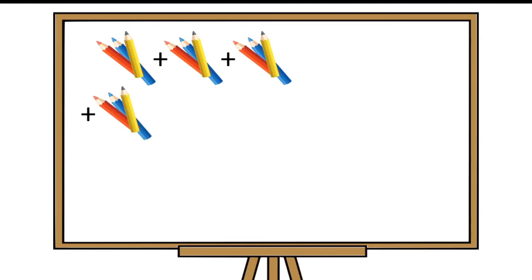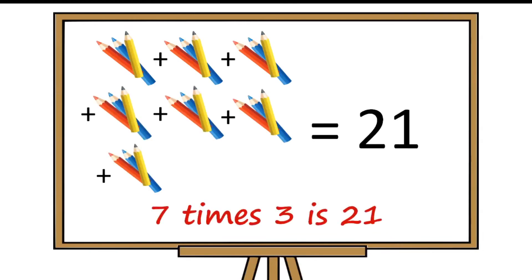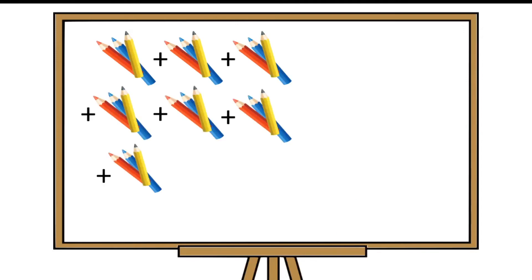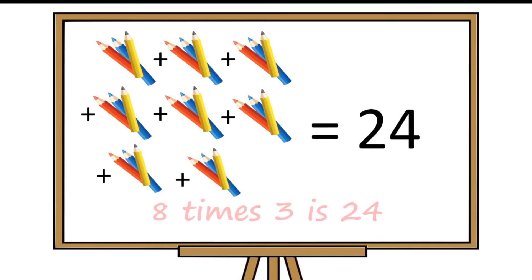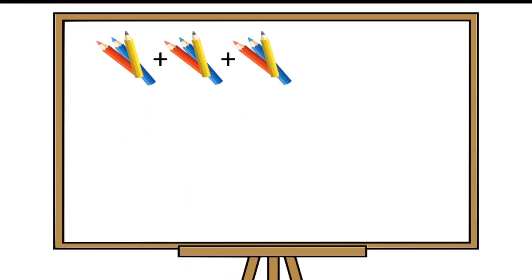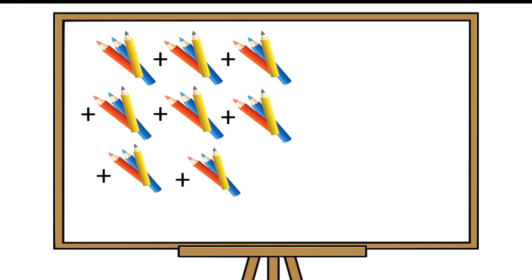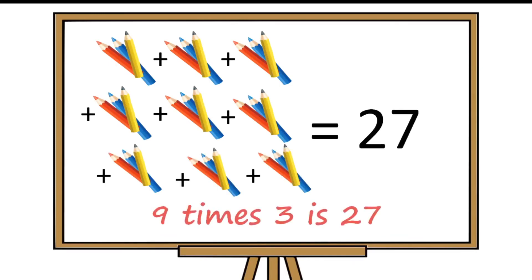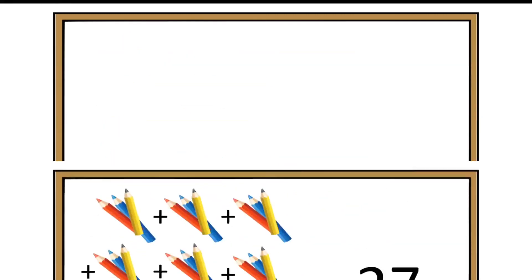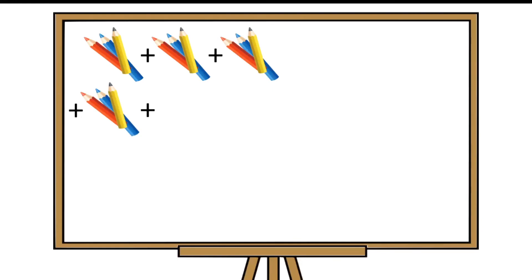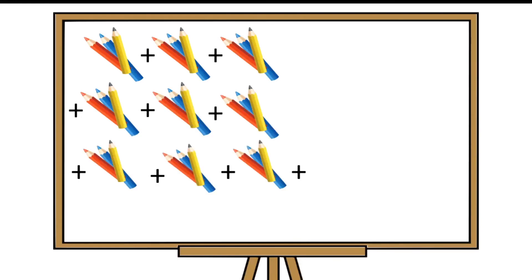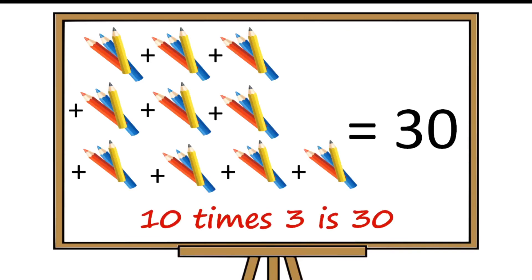Seven groups of three pencils is equal to twenty-four. It means seven times three is twenty-one. Eight groups of three pencils is equal to twenty-four. It means eight times three is twenty-four. Nine groups of three pencils is equal to twenty-seven. And ten groups of three pencils is equal to thirty. It means nine times three is thirty.